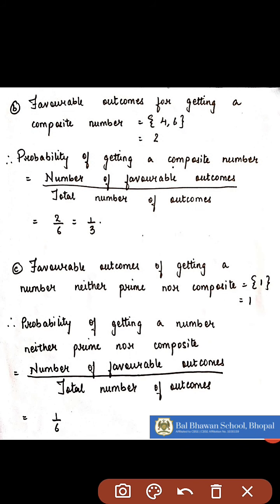In the next case, you want to find the favourable outcomes for getting a composite number. Out of the 6 numbers — 1, 2, 3, 4, 5, and 6 — the composite numbers are 4 and 6 only. Therefore, the probability of getting a composite number is 2 upon 6, which simplifies to 1 upon 3.